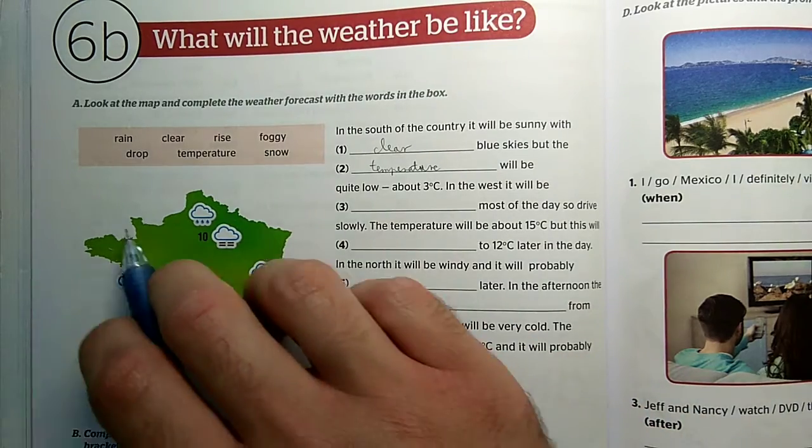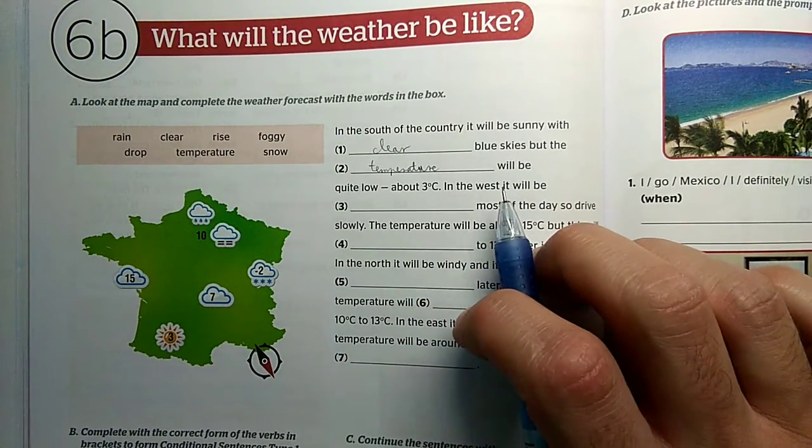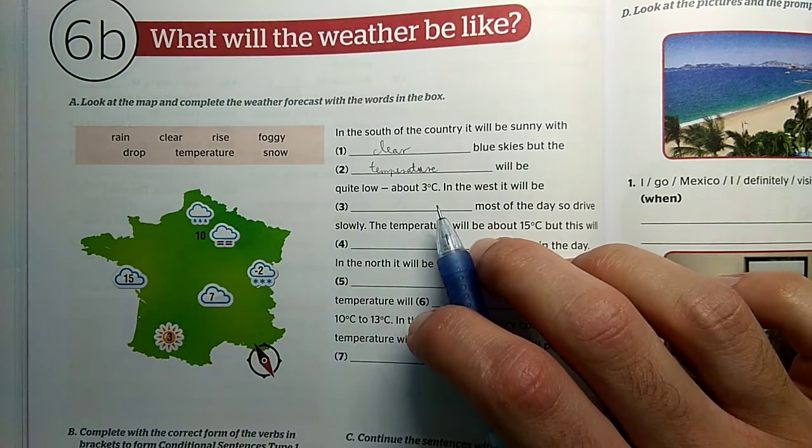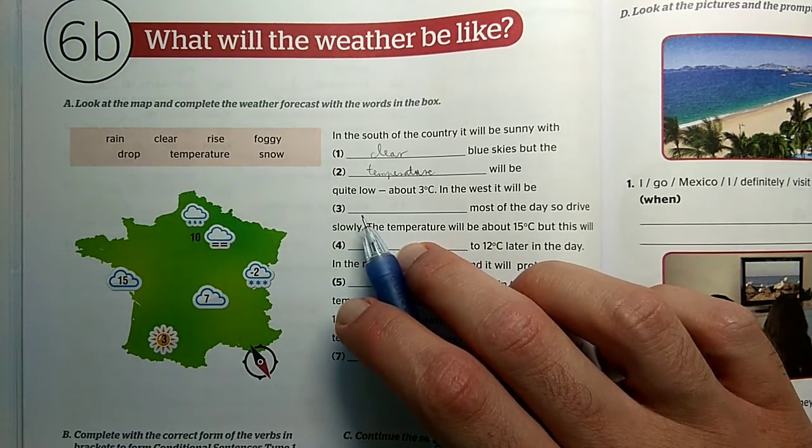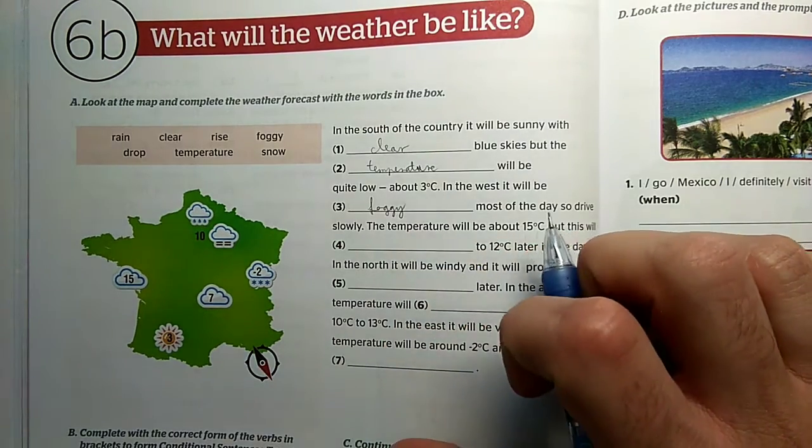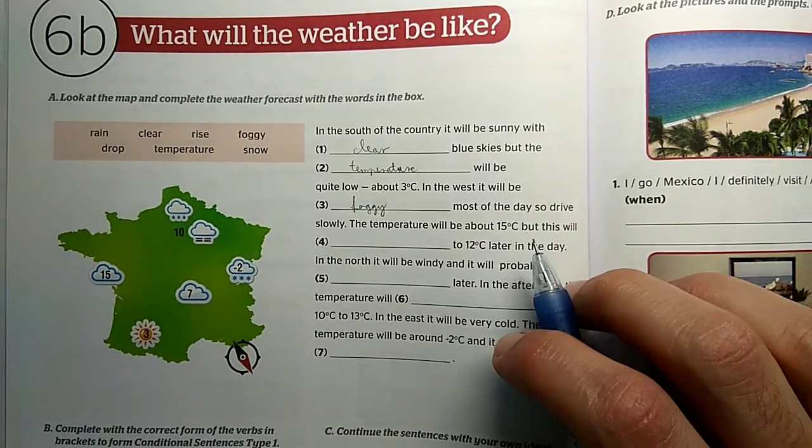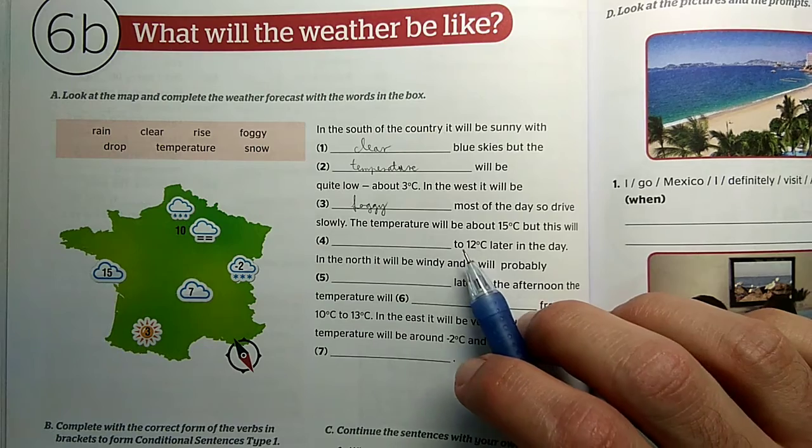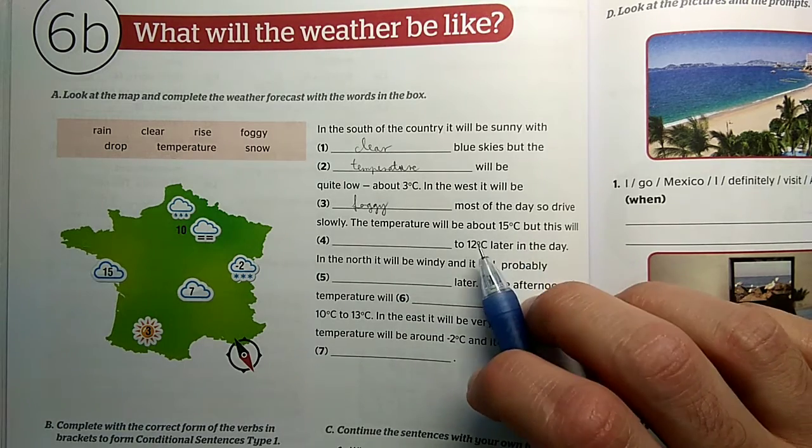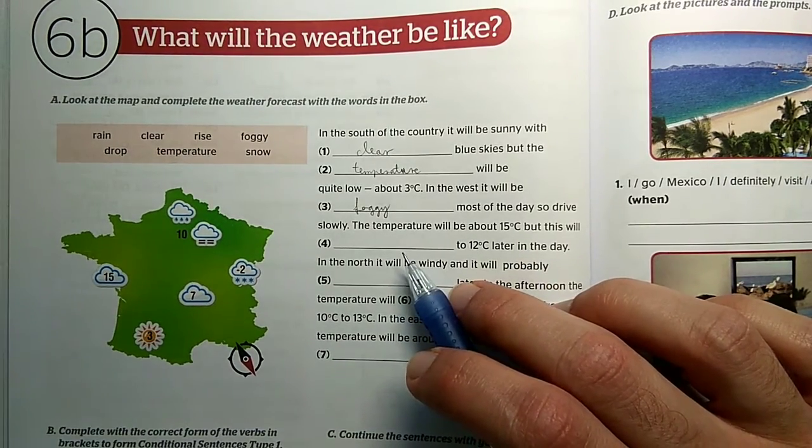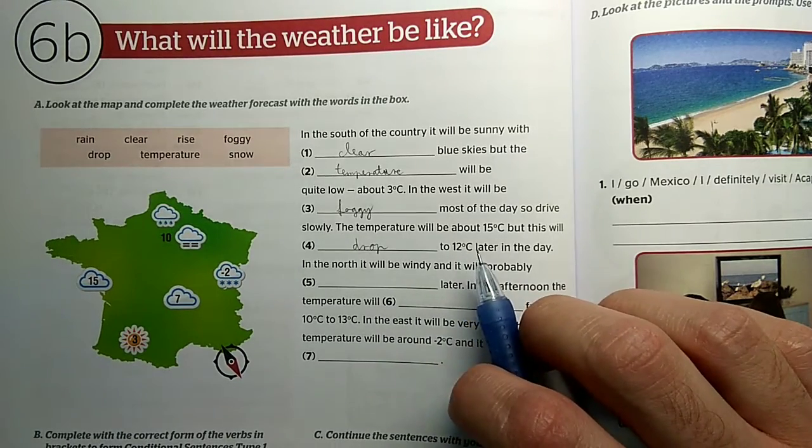In the west it will be foggy most of the day, so drive slowly. In the west the weather will be foggy most of the day, so you need to drive carefully. So in the west it will be foggy most of the day, so drive slowly. The temperature will be about 15 degrees, but it will drop to 12 degrees later in the day.